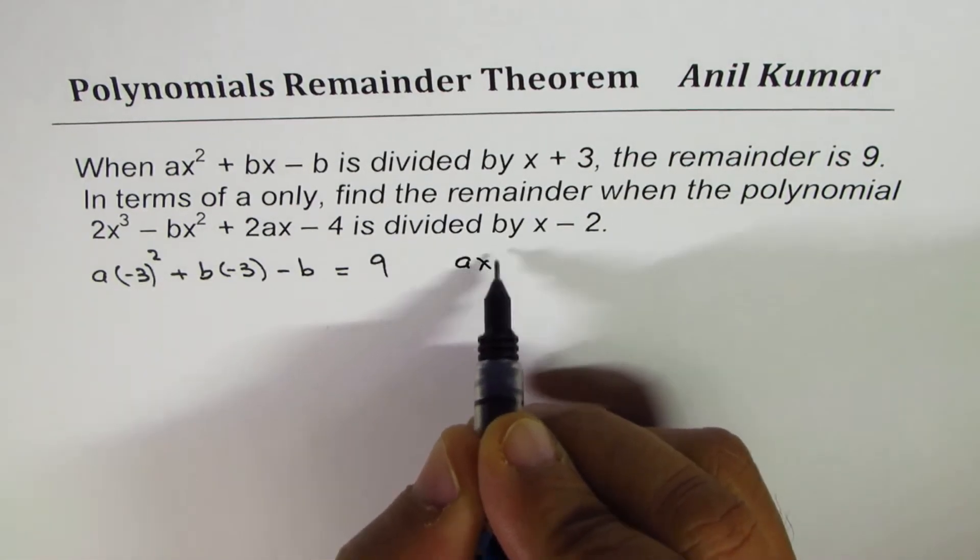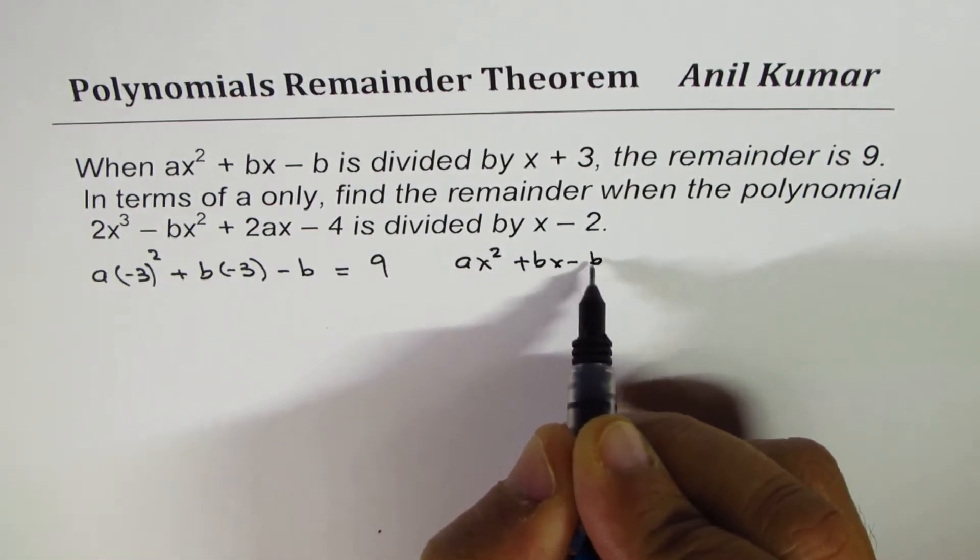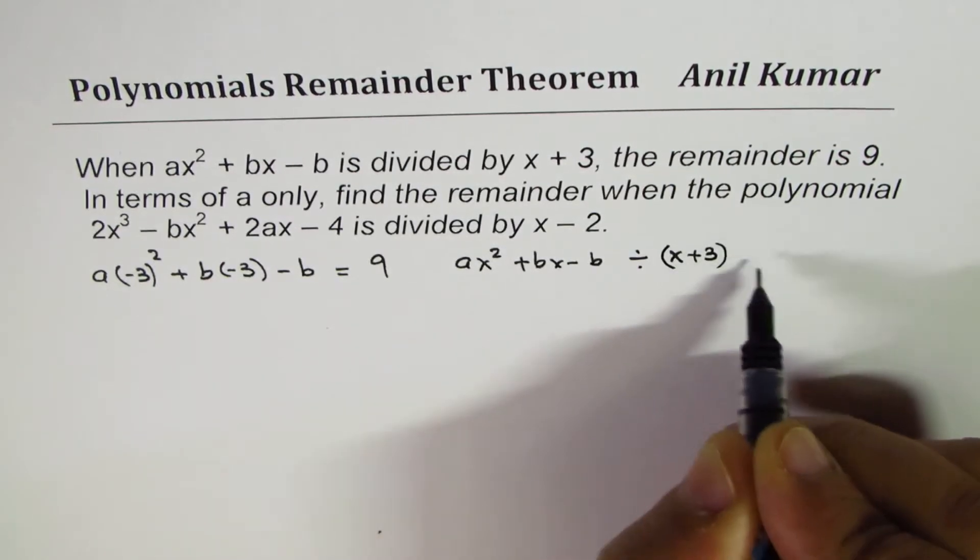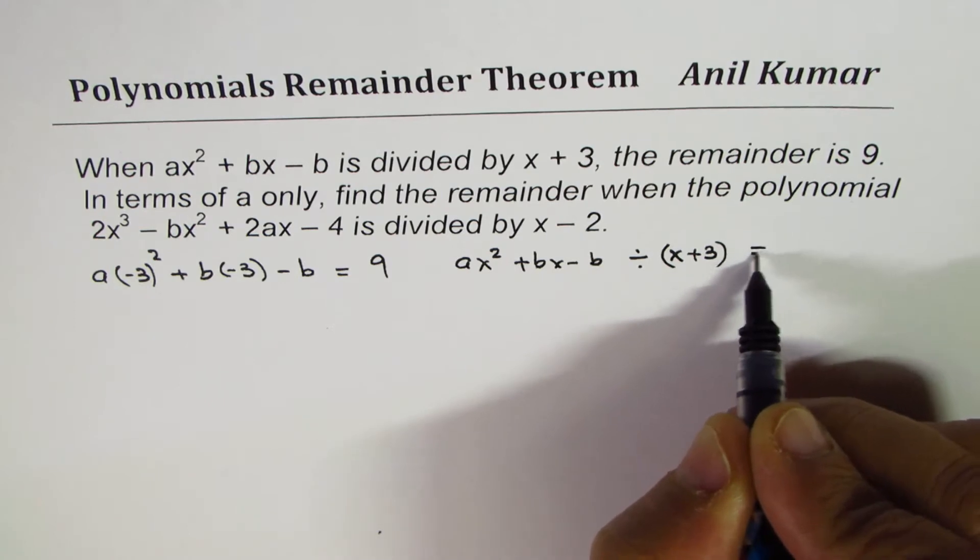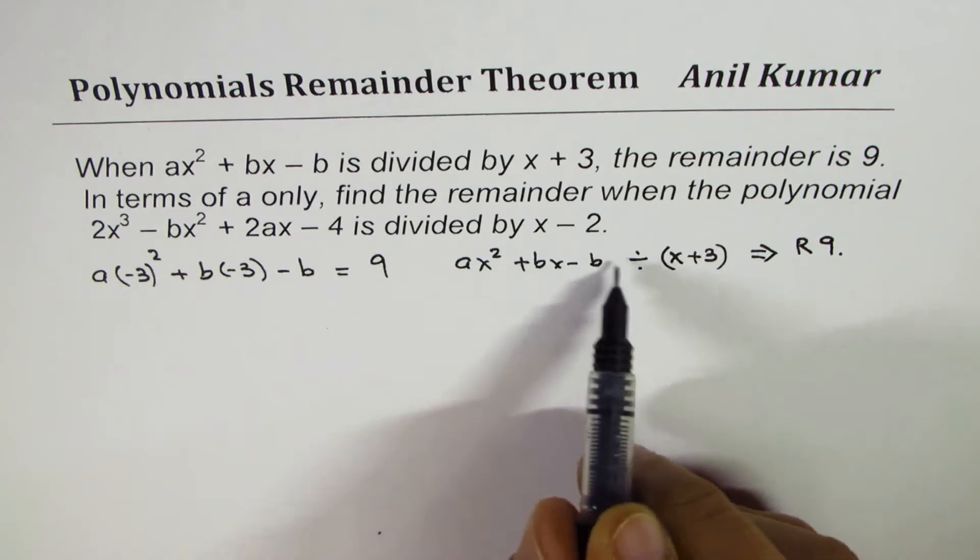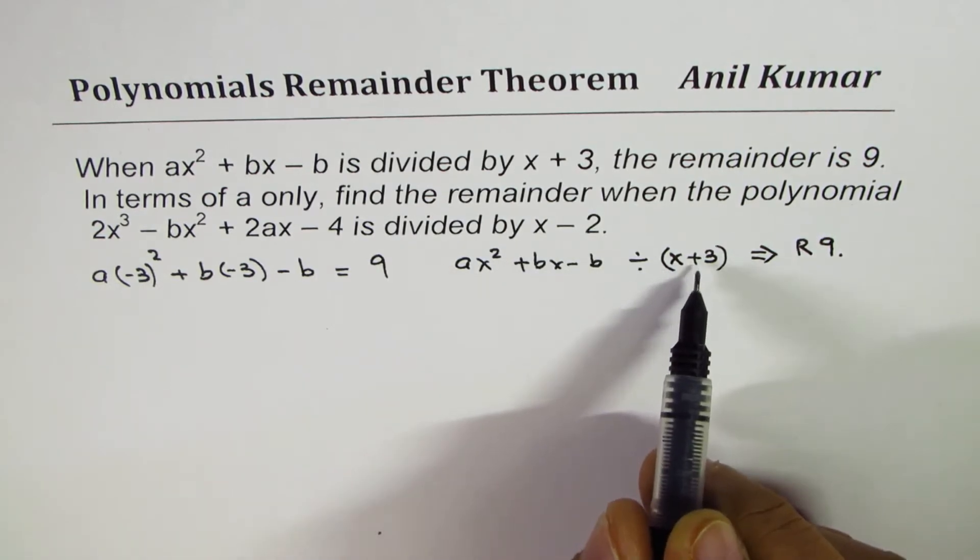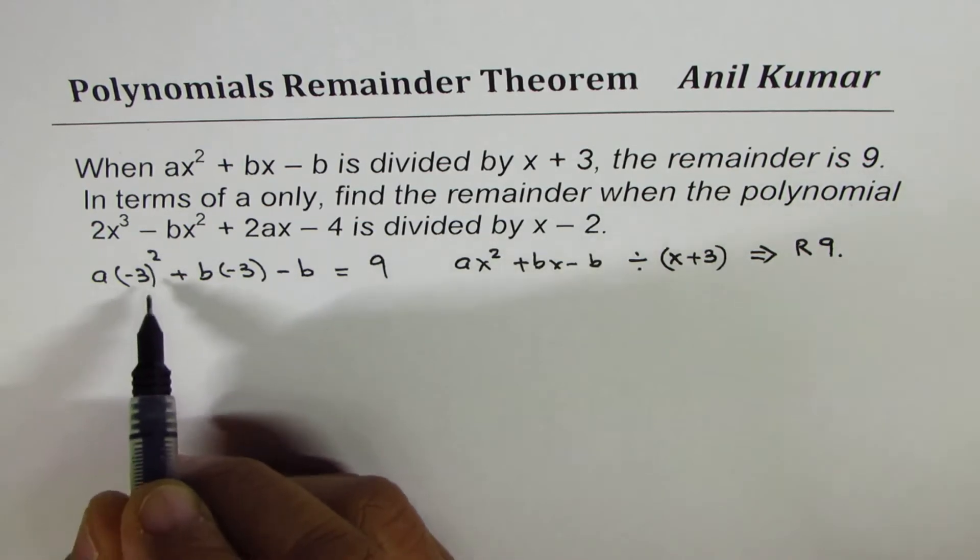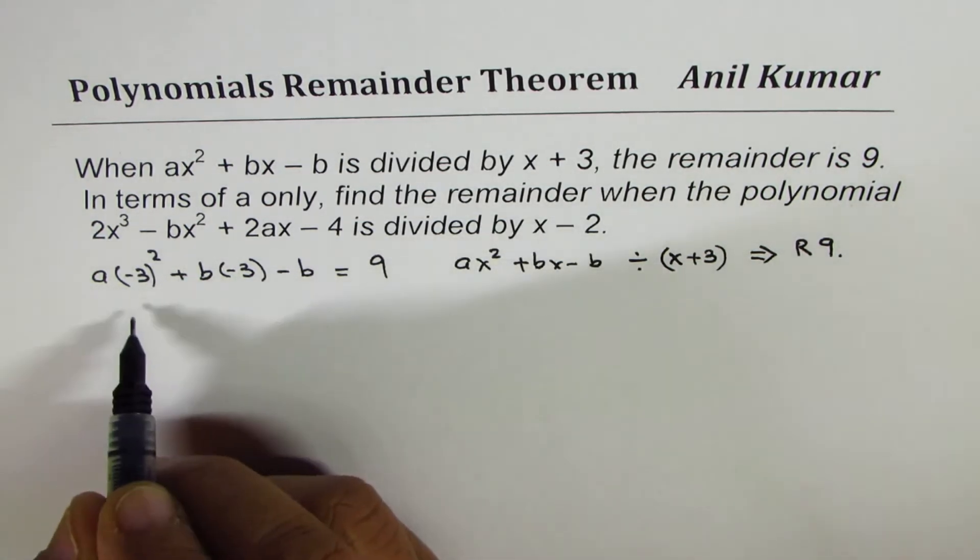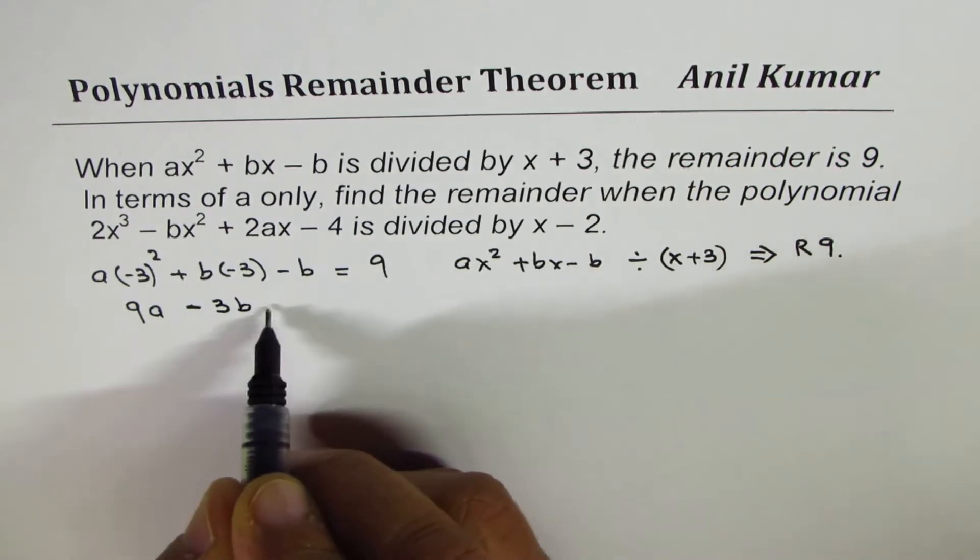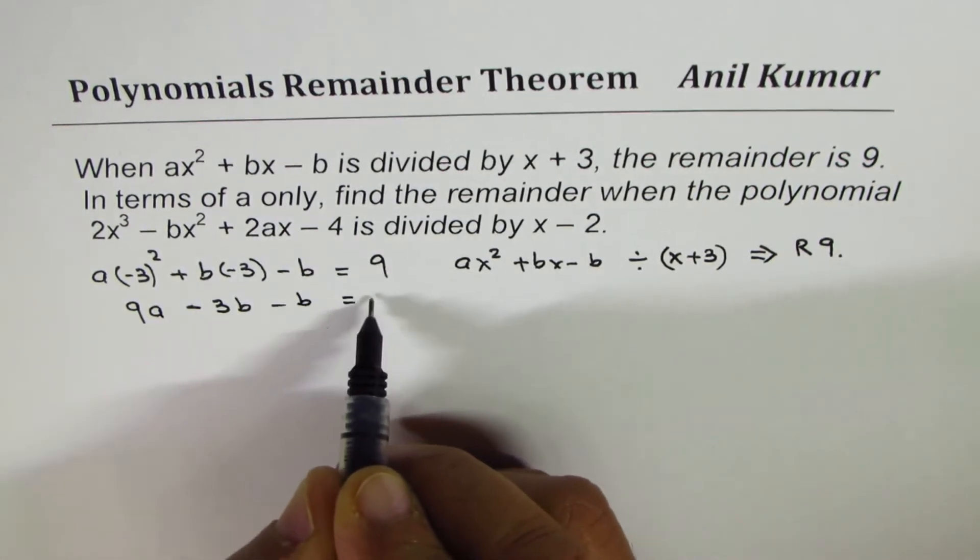Since ax square plus bx minus b divided by x plus 3 gives you a remainder of 9, that means value of this polynomial at x equals to minus 3, which makes this divisor 0, should be 9. So let's calculate this: minus 3 square is going to be positive 9. So 9a minus 3b minus b is equal to 9.